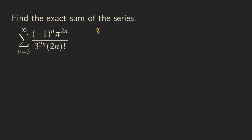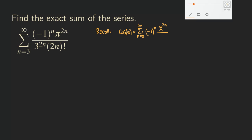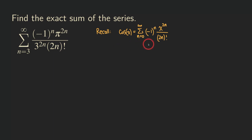Let's recall that cosine of x is equal to its Maclaurin series. Its Maclaurin series is the summation from n starting at 0 to infinity. The alternating factor is negative 1 to the n, and then for x we have x to the 2n divided by 2n factorial. That's the Maclaurin series for the cosine.